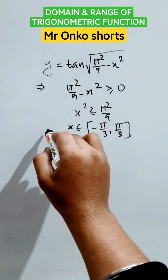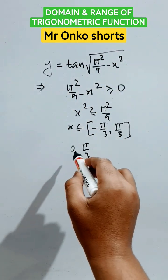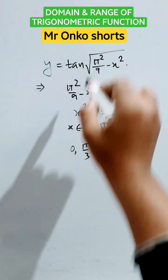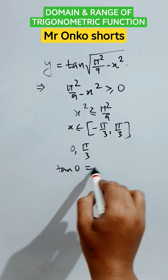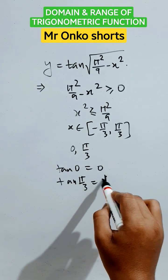This is the domain of the function. Tan x is increasing in the interval 0 to π by 3. If we put x equals 0 here, we will get tan 0, that is 0. And if we put π by 3 in place of x, it will be root 3.